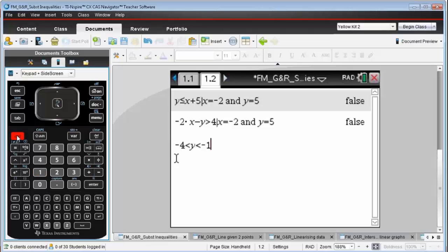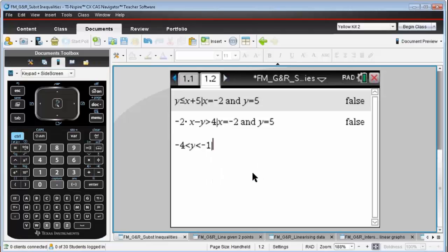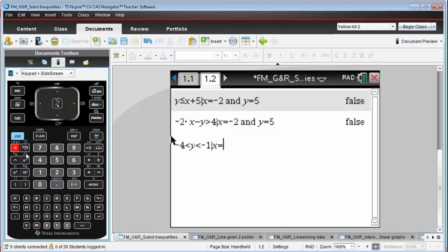And to get the given that sign, this here. And then once again, x equals negative 2. Hit the space bar, type in the word and, space bar again, and y equals 5.